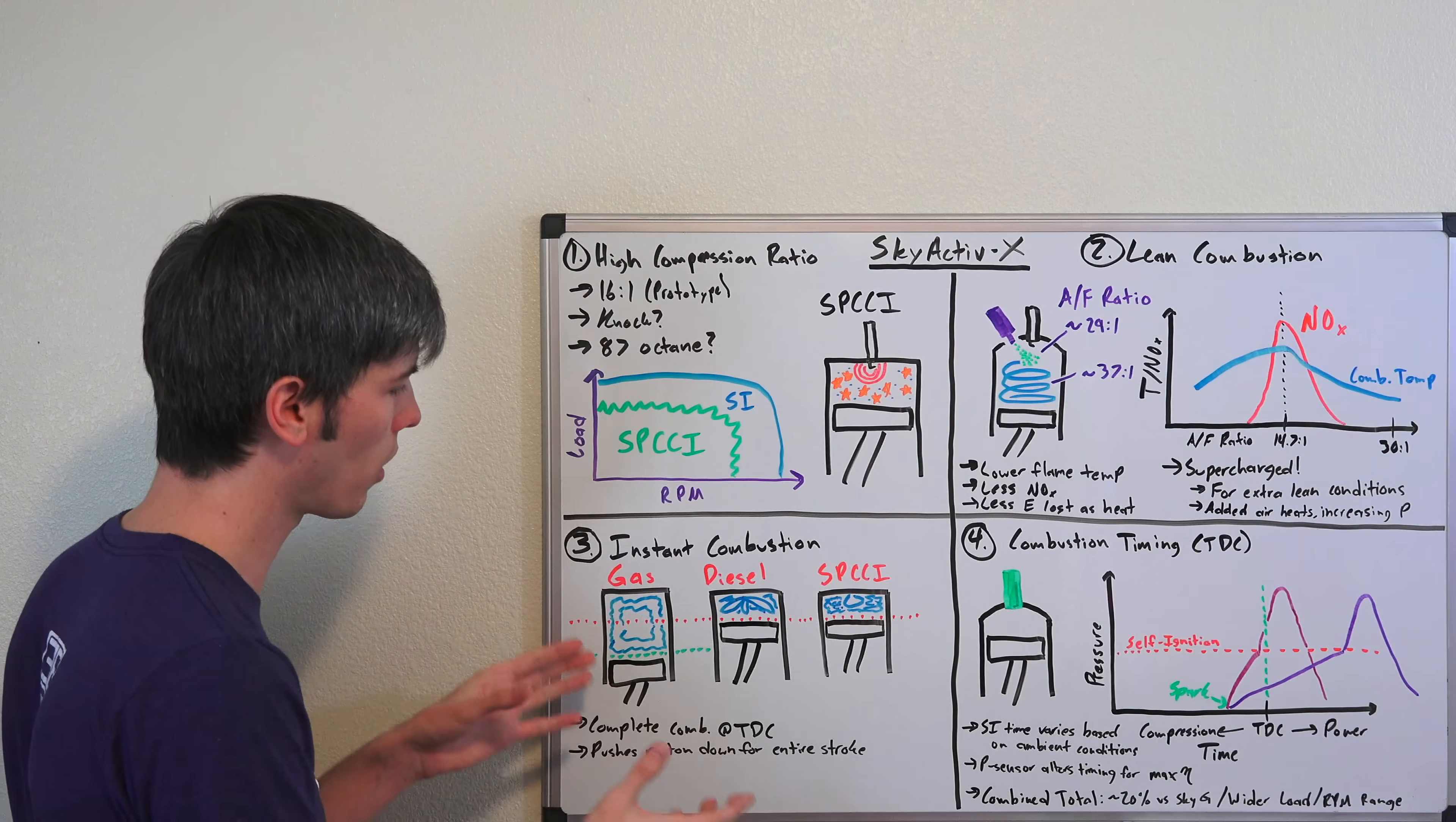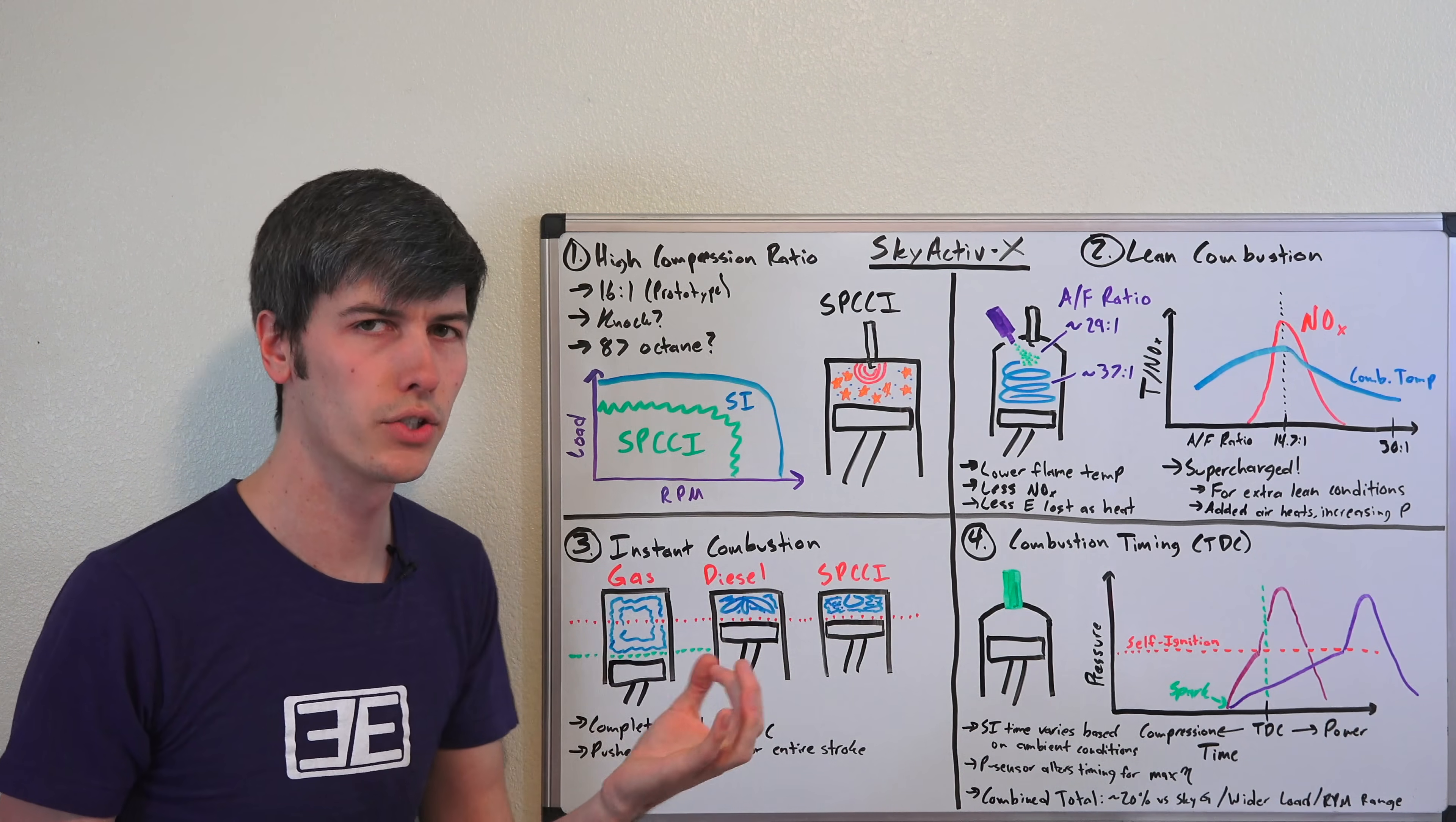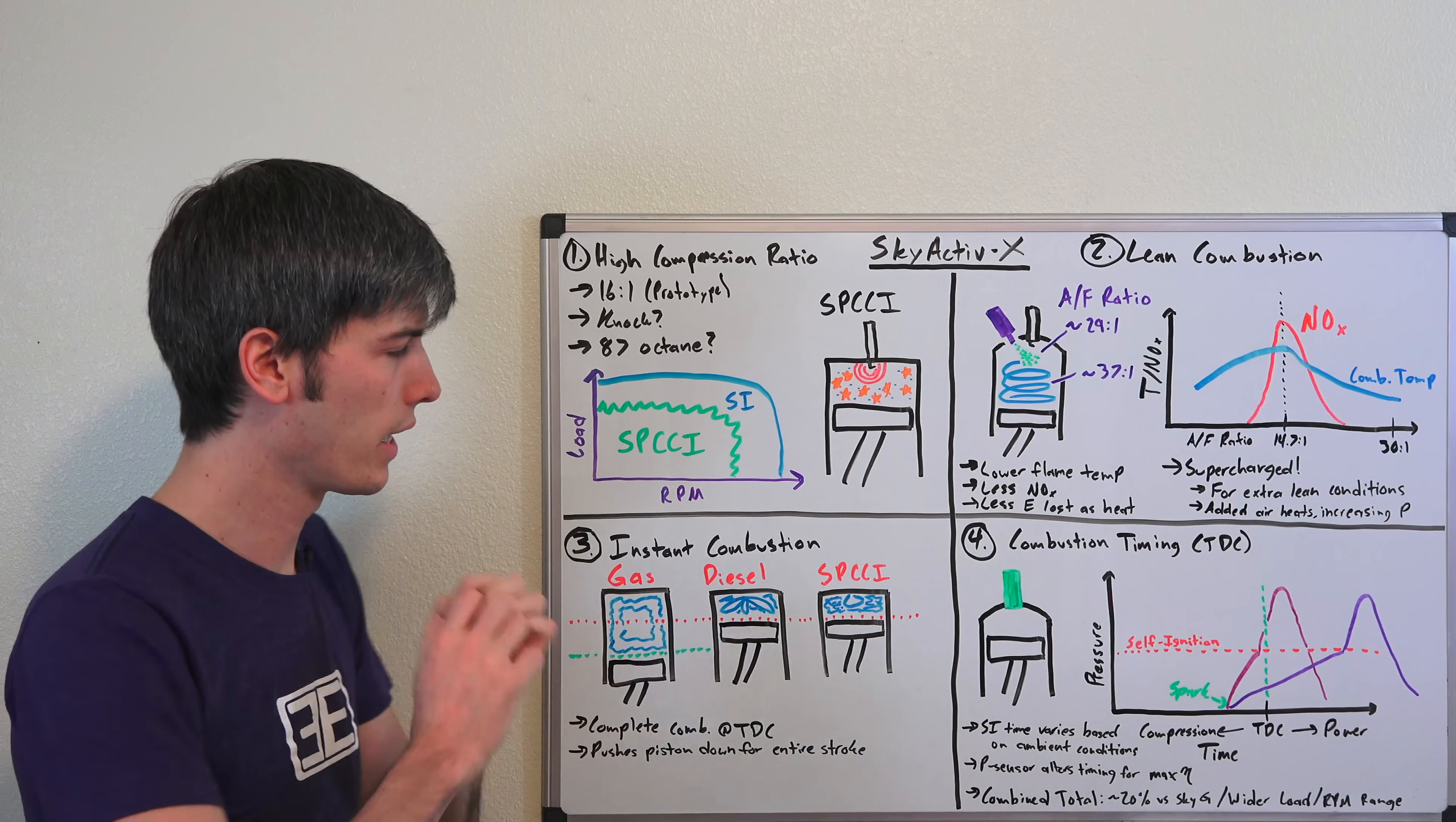Let's move on to our third ideal scenario, which is instant combustion. Basically with an internal combustion engine you want that combustion to occur completely at top dead center all at once, no delay whatsoever. With a gasoline engine you have a spark that fires and then the combustion travels outward from that spark. With the diesel engine it's much more instantaneous, much faster. You spray in the fuel and immediately everything combusts.